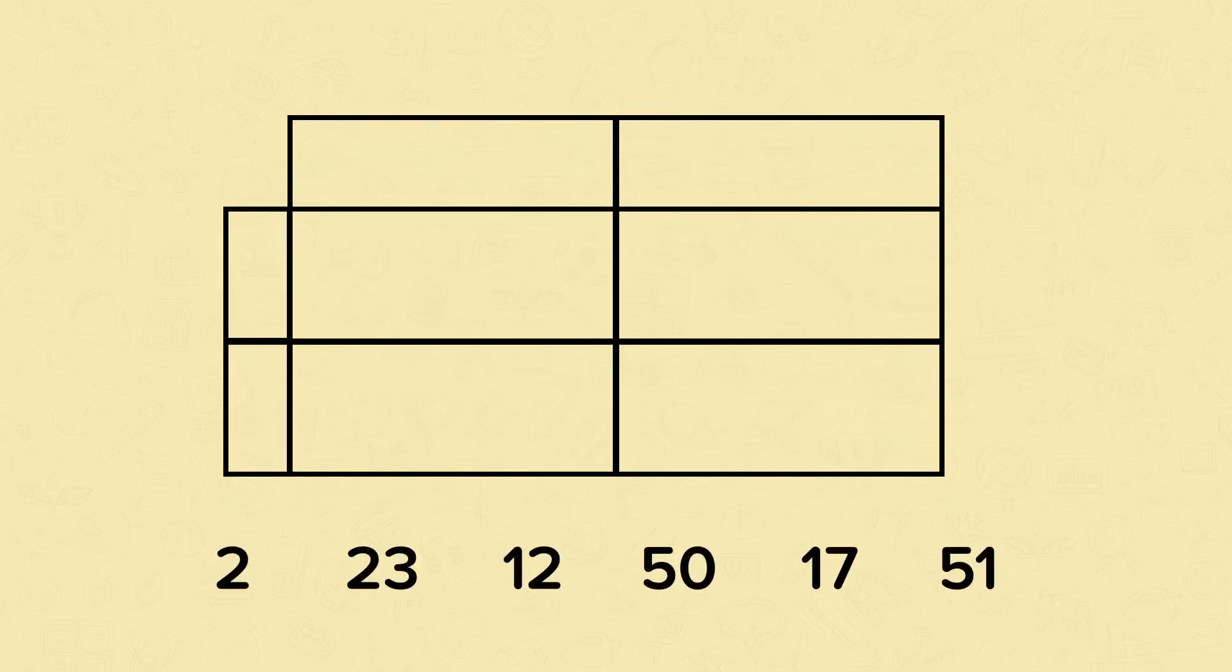Now let's use this Carroll diagram to sort these numbers. The column headings are 'less than twenty' and 'greater than twenty'. The row headings are 'odd' and 'even'.